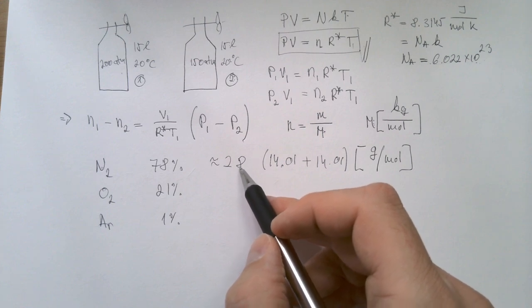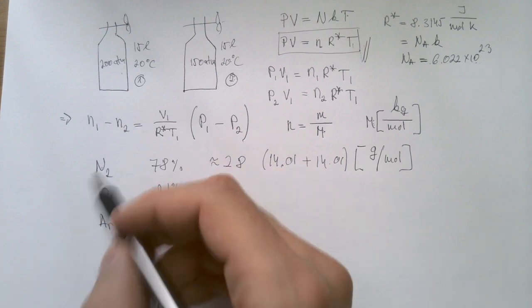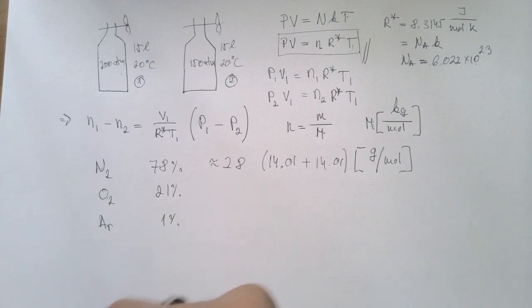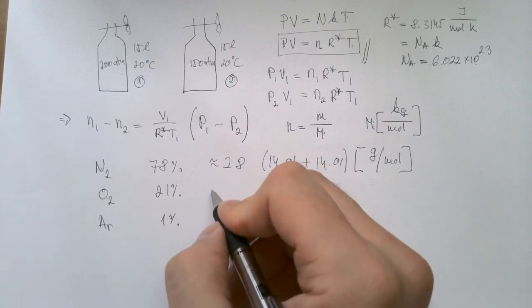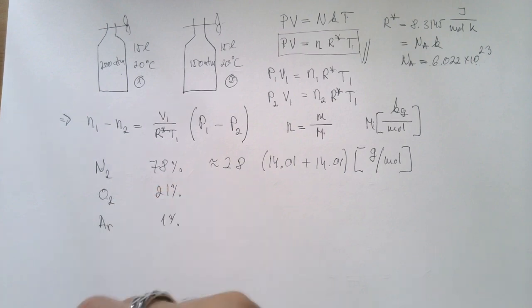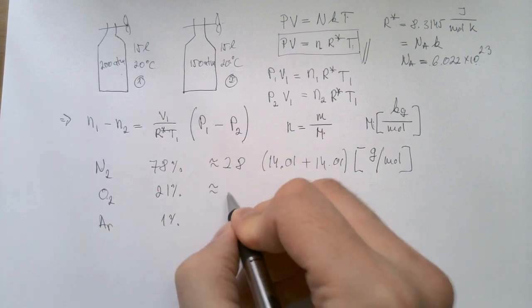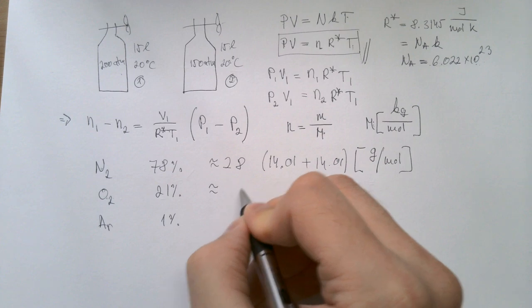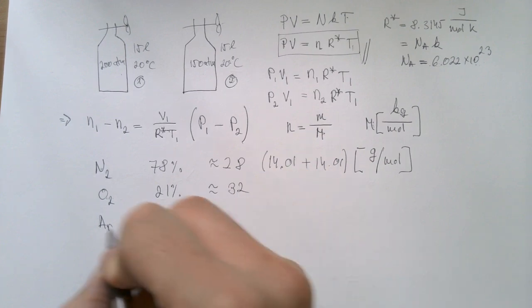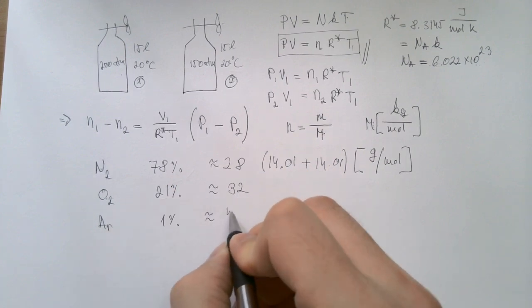Atomic mass is really not number of protons plus number of neutrons, but it's quite similar for many elements, such as nitrogen N2. Oxygen has eight protons, eight neutrons in the nucleus, and there are two of these, so I get that approximately atomic mass is 32. And approximately atomic mass for argon is 40.